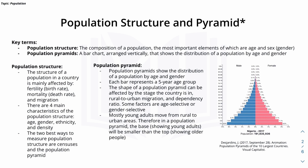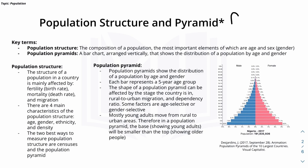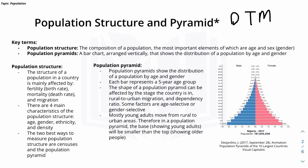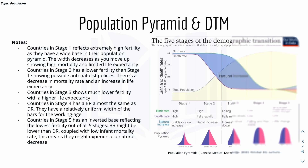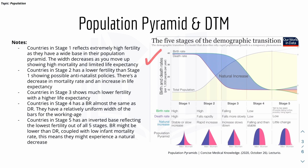The shape of this population pyramid can be affected by the stage the country is in — for example stage one through to stage five — which is reflected in the Demographic Transition Model, or DTM, from the last video. The shape is also affected by rural to urban migration. For example, when young adults move from rural to urban areas, the base of the pyramid will be smaller than the top. There are different shapes of population pyramids depending on what stage the country is in.